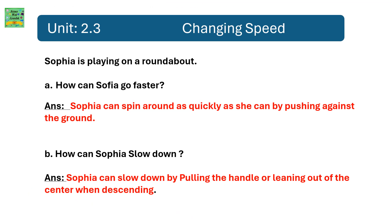Unit 2.3: Changing speed. Sofia is playing on a roundabout. How can Sofia go faster? Sofia can spin around as quickly as she can by pushing against the ground. How can Sofia slow down? Sofia can slow down by pulling the handle or leaning out of the center.